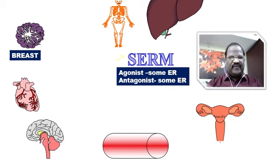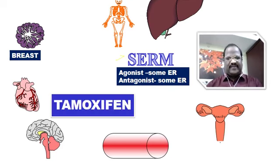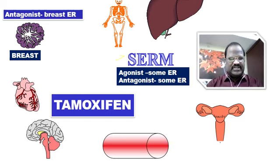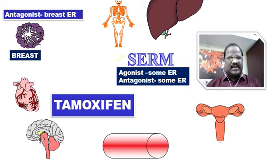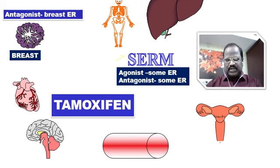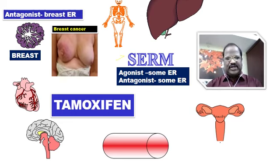Look at the diagram — SERMs act on various parts of the female body. Take one drug called tamoxifen. Tamoxifen is a SERM because it acts as an antagonist on breast estrogen receptors, while acting as an agonist on all other estrogen receptors. Because of antagonistic action on breast estrogen receptor, it is useful for treatment of ER-positive breast cancer.